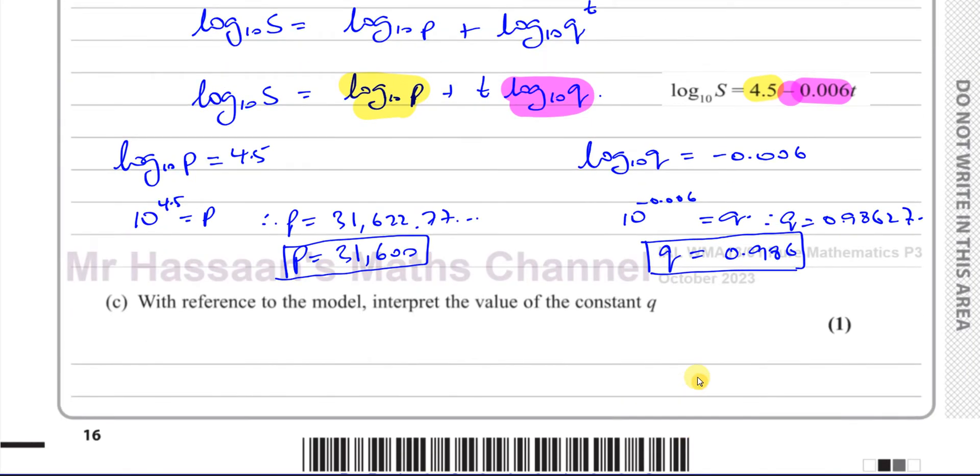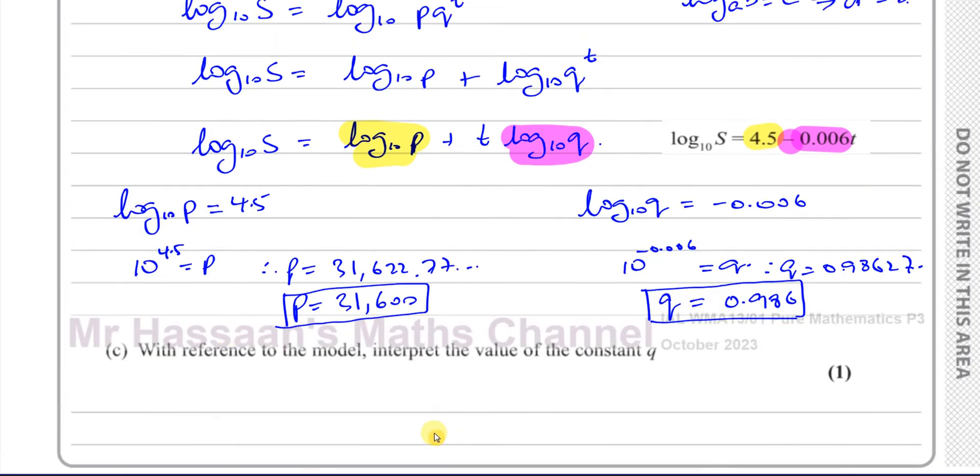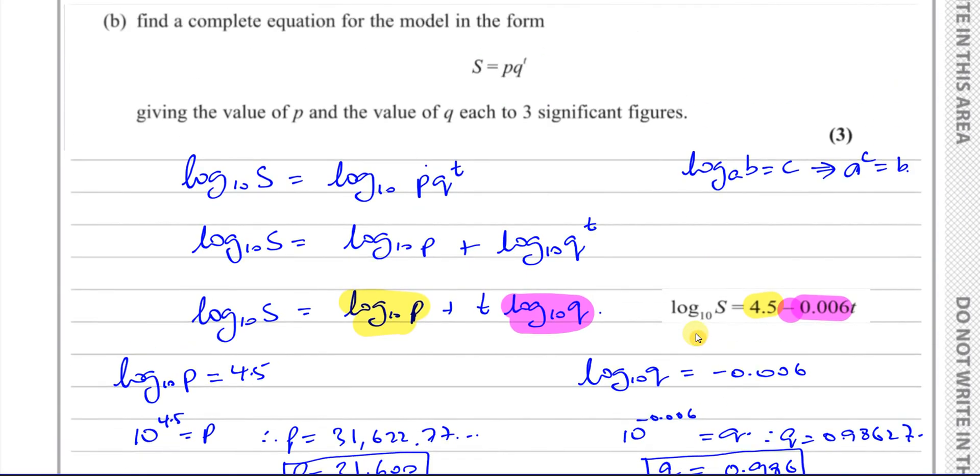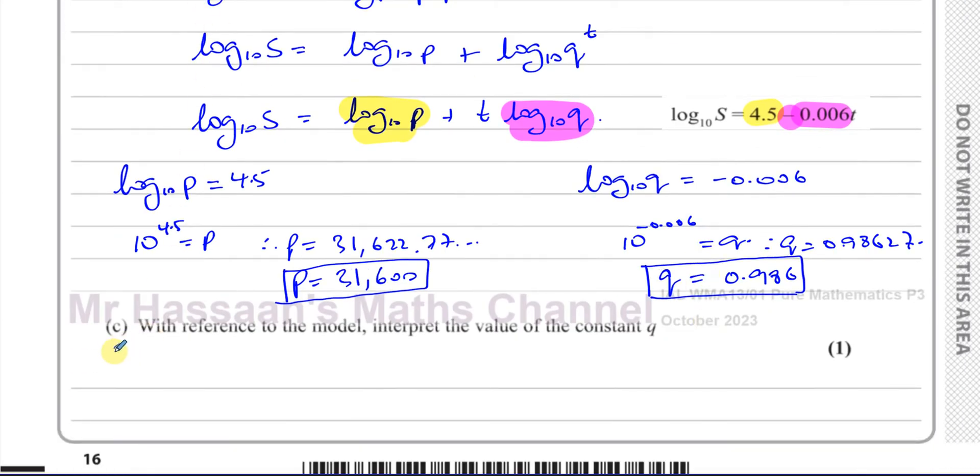And now it says with reference to the model, interpret the value of the constant q. This is worth one mark. I'm sure that a lot of students didn't know how to do this. It's very important for you to understand. If we go back to the model S equals pq^t, we have S equals 31,600 times 0.986 to the power of t. This is a type of exponential equation which involves exponential decrease. It's like a geometric series with a common ratio 0.986, so the numbers are going to go down each time.